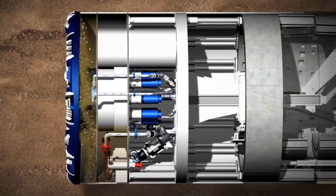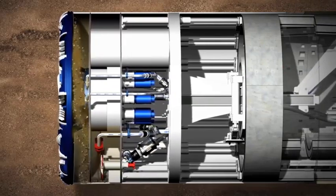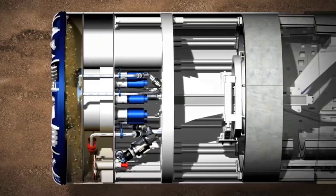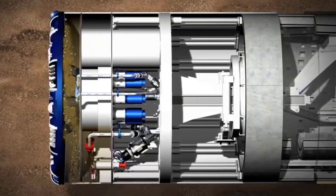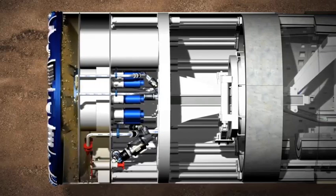A filter cake is created ahead of the cutting wheel by pressurizing the bentonite in the working chamber with compressed air. The bentonite penetrates the ground to form a membrane which holds back water. Changes in the soil can be handled by adjusting the pressurization.